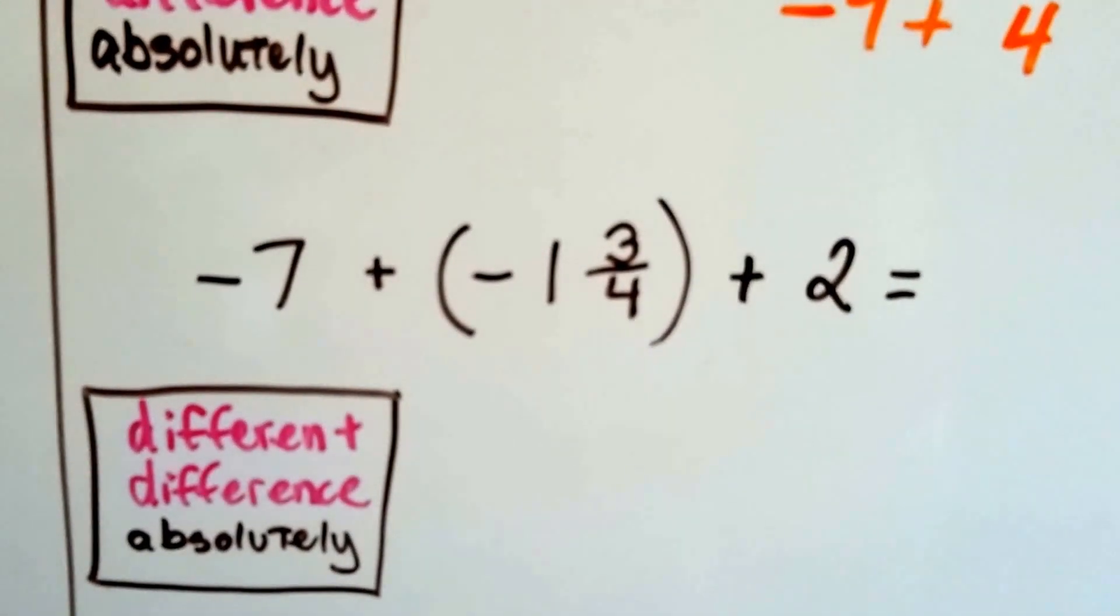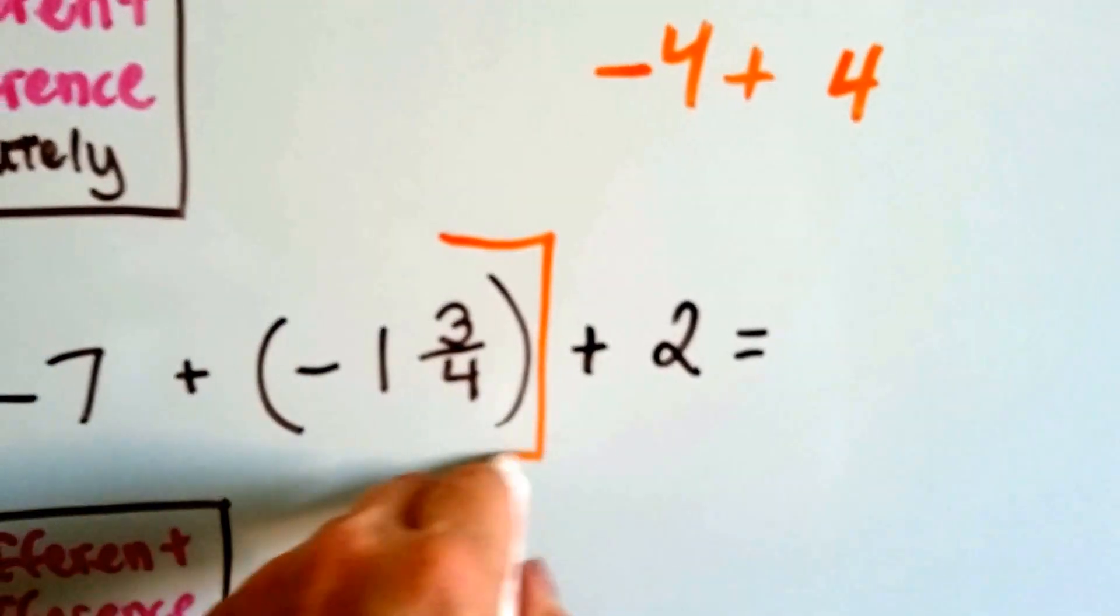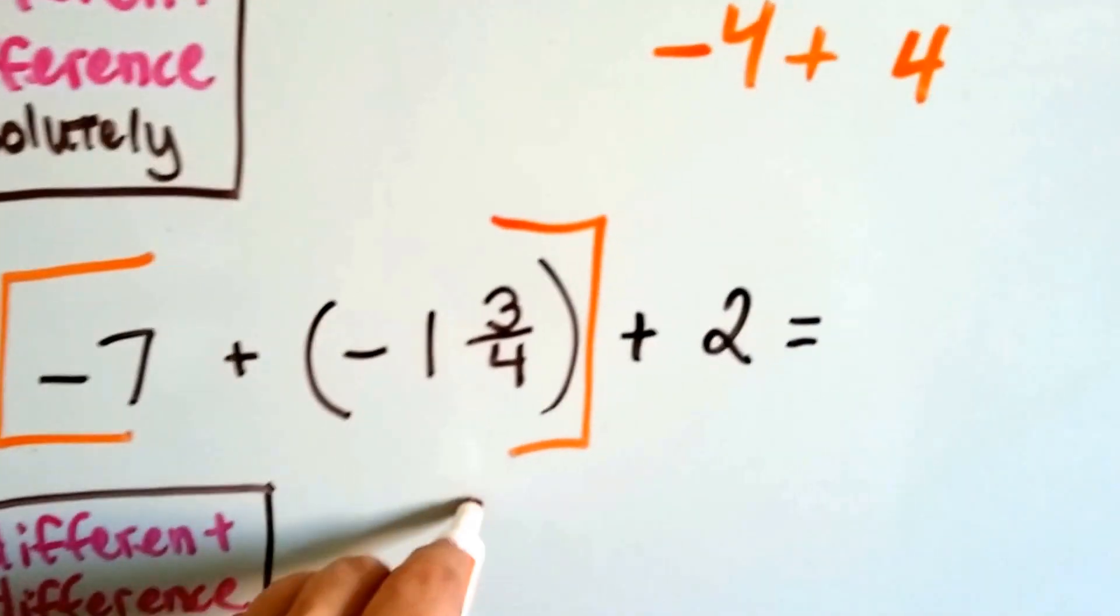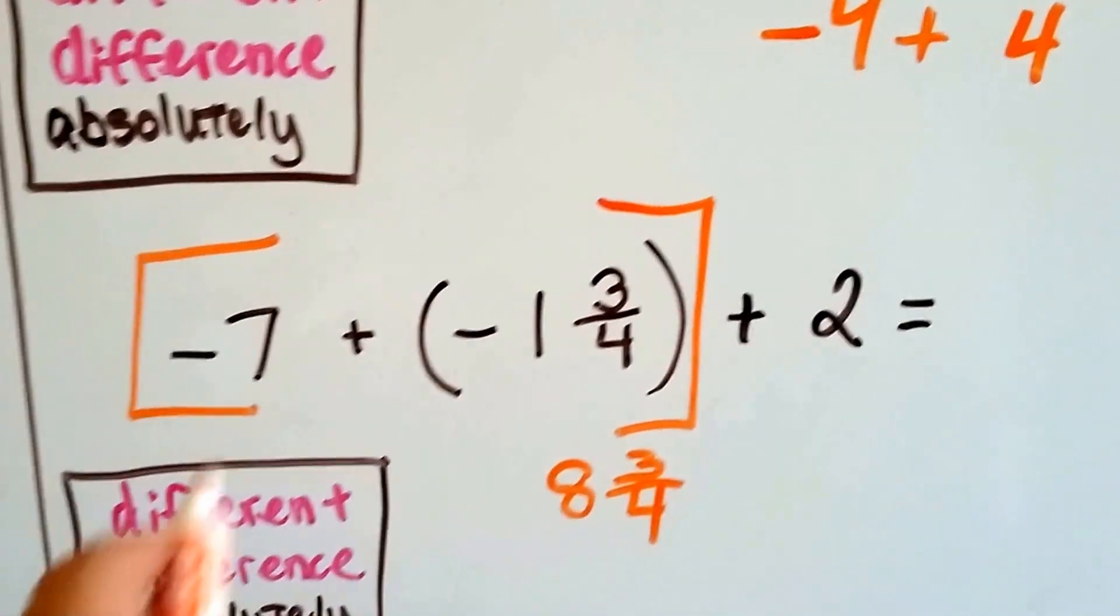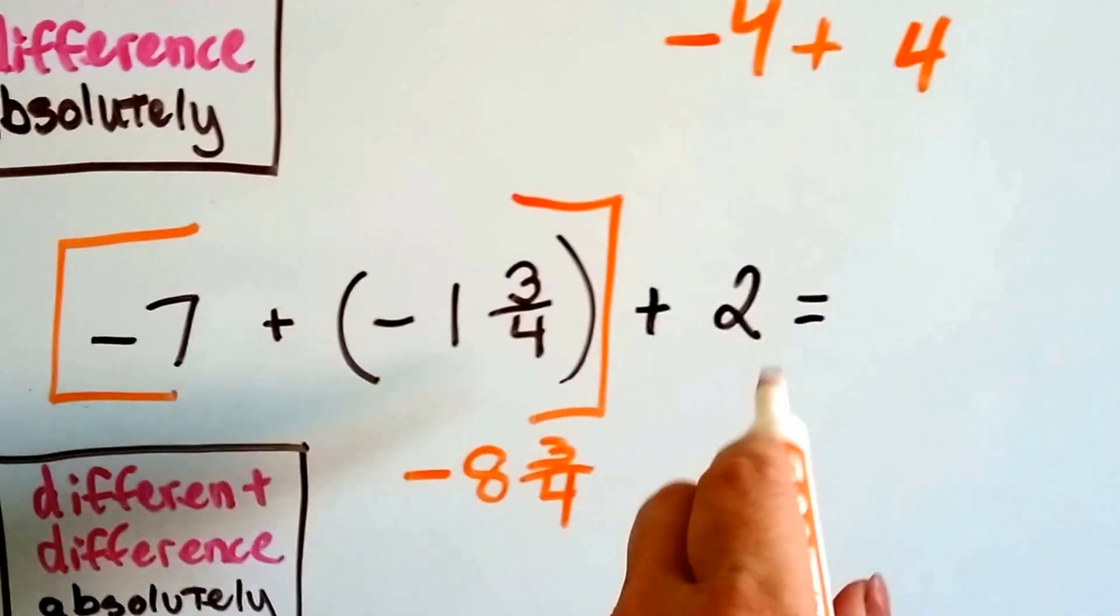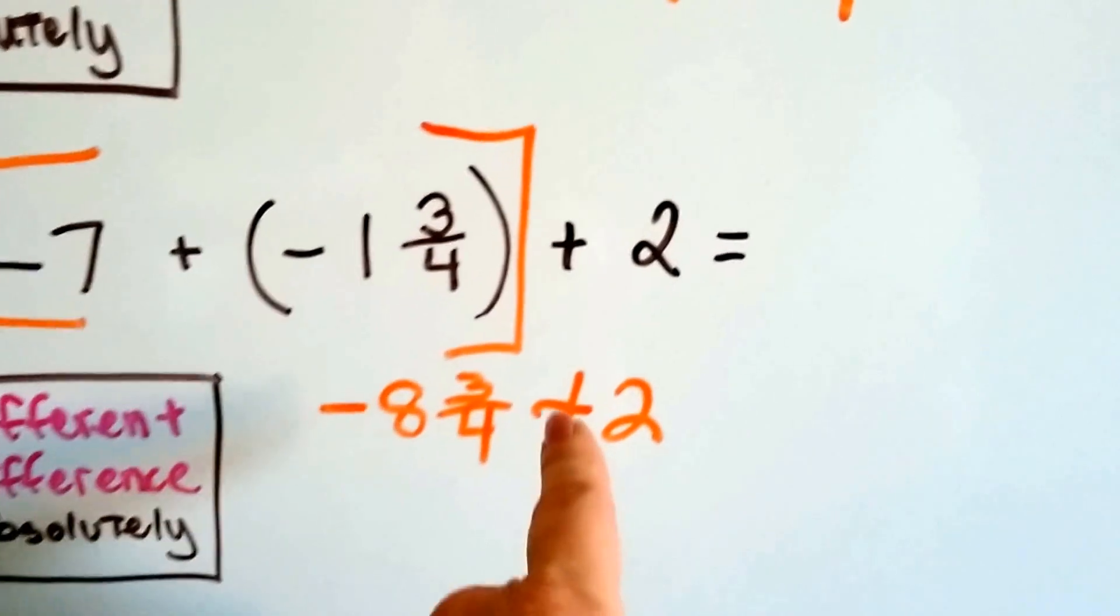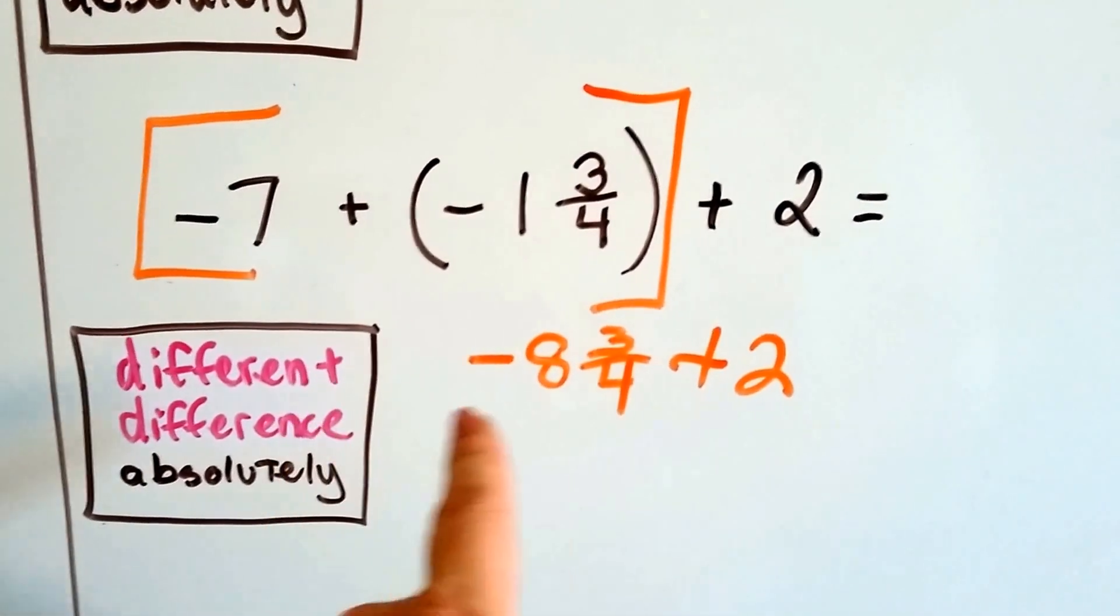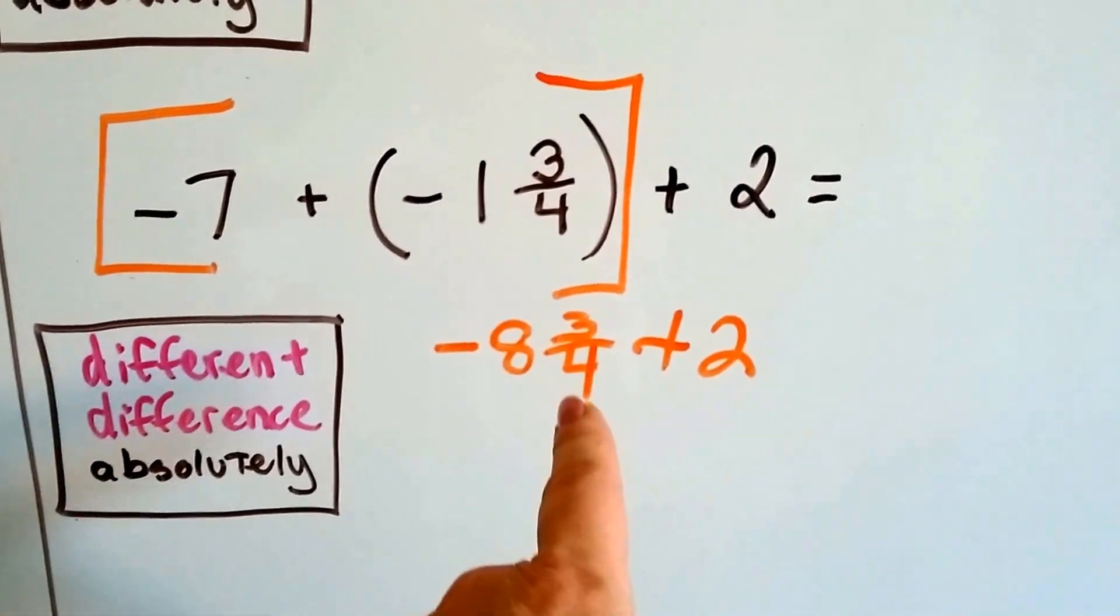We have a negative 7 plus a negative 1 and 3 fourths plus a 2. So we're going to group together the negatives, and we're going to get a negative 8 and 3 fourths. They both have the same sign, so that's why it's negative. But now we're adding a positive 2. And when we're adding different signs, we find the difference, don't we? And the difference between 8 and 3 fourths and a 2 is 6 and 3 fourths.